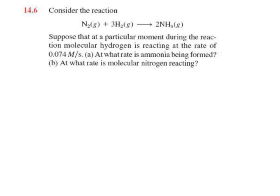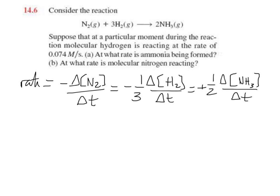We can start off by writing down the rate expression. We could measure the rate by measuring any one of these three terms here. Since the rate is equal to this or this or this, then all three of these must be equal to each other.